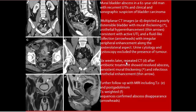Mural bladder abscess in an elderly man. Multi-phase bladder CT depicts a poorly distensible bladder with mural thickening, urothelial hyper-enhancement, consistent with active urinary tract infection. Fluid-like collection with irregular enhancement along the posterolateral aspect. Six weeks later, after antibiotic treatment, the abscess resolves with persistent mural thickening and infectious urothelial enhancement. Follow-up T2 MRI: abscess disappears completely.